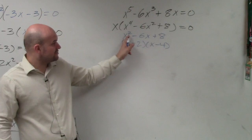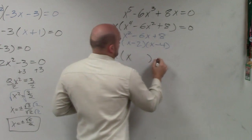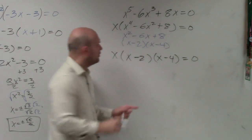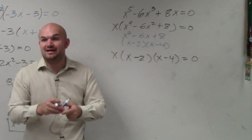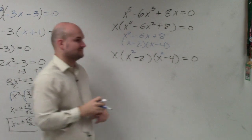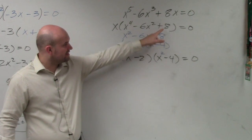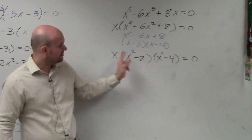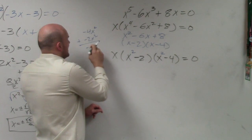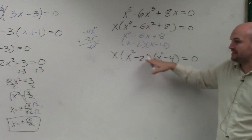Our only problem is x times x gives us x squared, but we need this times this to give us x to the fourth. So what power should my x's be to multiply to give me x to the fourth, but add to give me x squareds? The answer is squared — so put a 2 there. x squared times x squared is x to the fourth. Negative 2 times negative 4 is positive 8. x squared times negative 2 is negative 2x squared; x squared times negative 4 is negative 4x squared. Negative 4x squared plus negative 2x squared is negative 6x squared. So it works! A lot of times just think of it as a regular trinomial and then rewrite it with your higher powers.